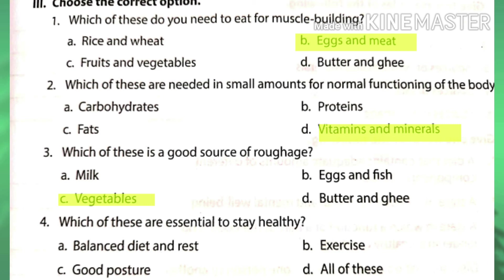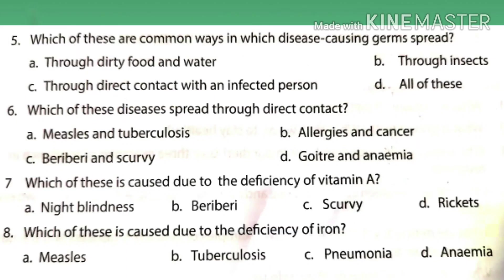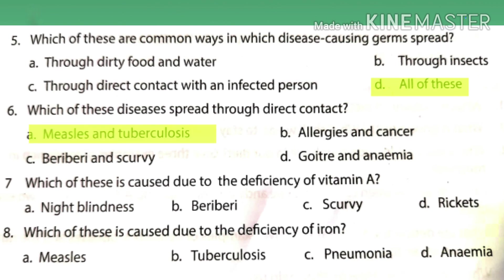Fourth MCQ: which of these are essential to stay healthy? The answer is all of these — balanced diet, rest, good posture, and exercise are all very necessary to stay healthy. Fifth: which of these are common ways in which disease-causing germs spread? Germs spread through dirty food and water, through insects, or through direct contact, so the answer is all of these.